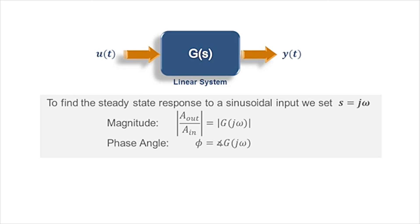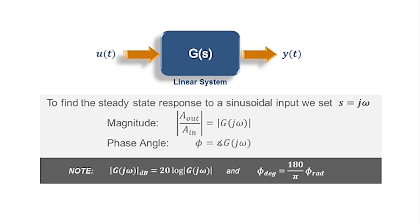The phase angle of that vector corresponds to the phase shift introduced by the system, and both of these will be functions of the frequency ω. Frequency diagrams are normally drawn on logarithmic scales. The magnitude is usually displayed in decibels, which is defined as 20 times the log of the amplitude ratio, and the phase angle is usually displayed in degrees. To create a frequency response diagram, we need to evaluate both of these functions at different values of ω in the frequency range of interest.